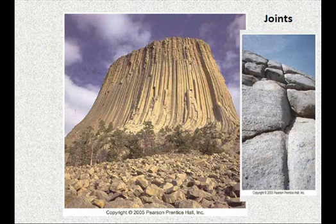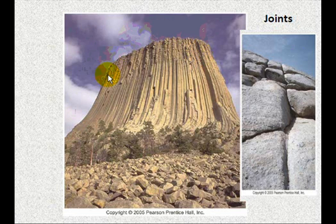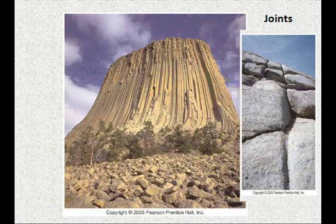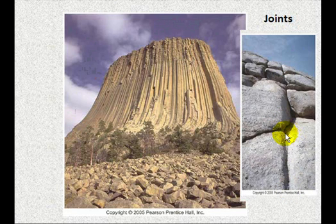The last type of deformation is something called jointing. Jointing is where you have some sort of vertical or horizontal separation in the rock system, but there isn't any movement — there are just discrete planes where the system starts to open up. On the left-hand side of the slide, you're looking at Devil's Tower up in northeastern Wyoming, believed to be an old volcanic plug where magma came up into the system and got stuck. As that magma cooled, the rock actually shrank and opened up these joints. Other rock units like sandstones and granites are also prevalent to creating joint systems, either when they cool or through other processes.